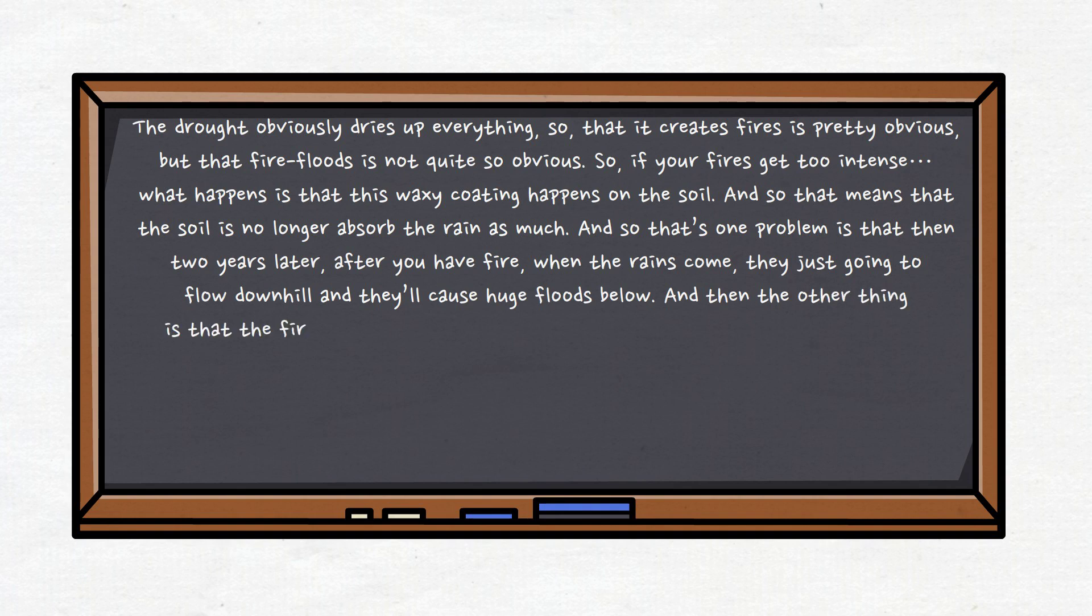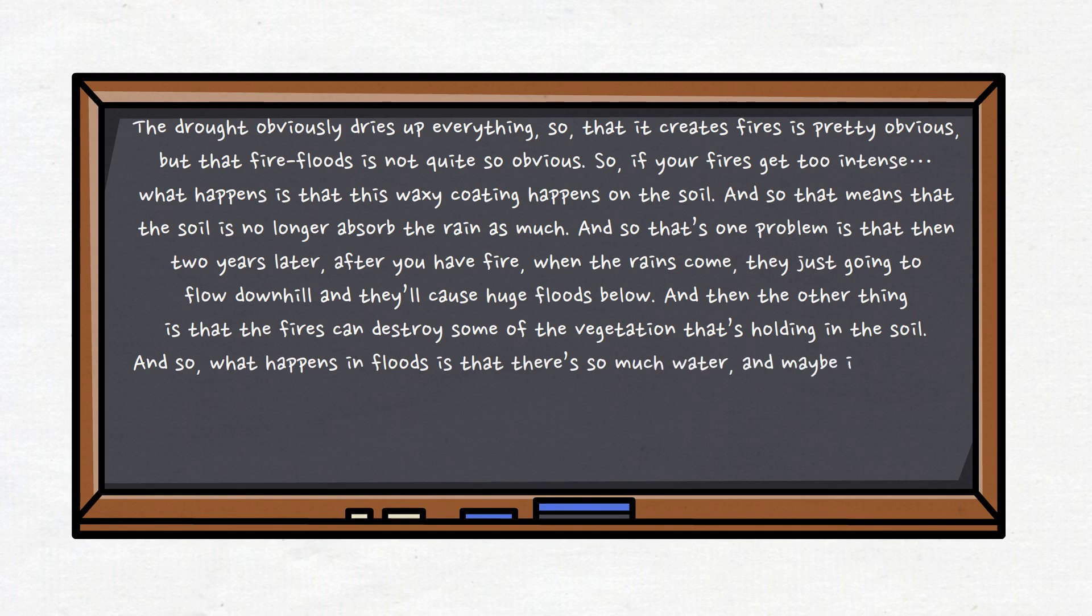The other thing is that fires can destroy some of the vegetation that's holding in the soil. So what happens in floods is that there's so much water, and maybe it's stopped further uphill, but then it accumulates and creates these landslides that trigger more, bigger landslides.